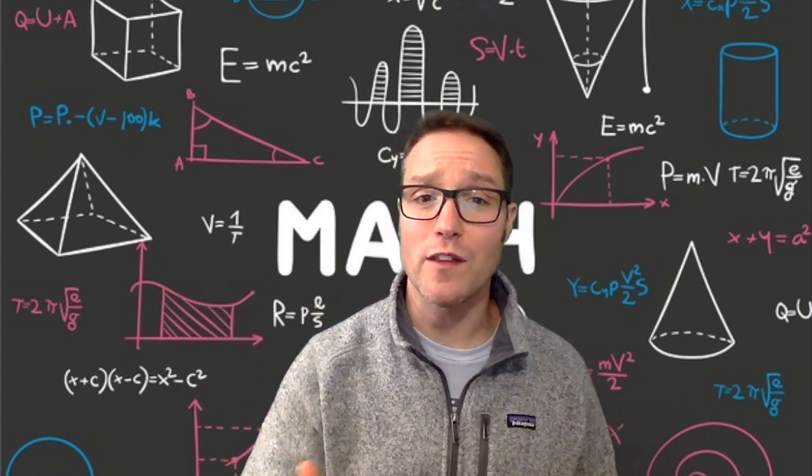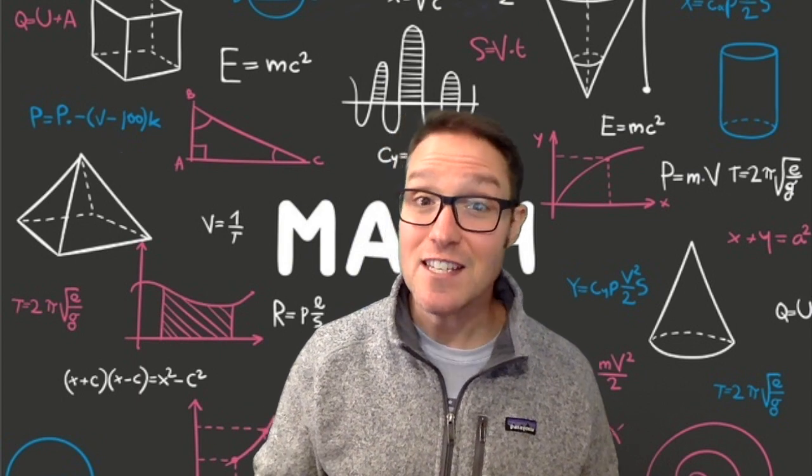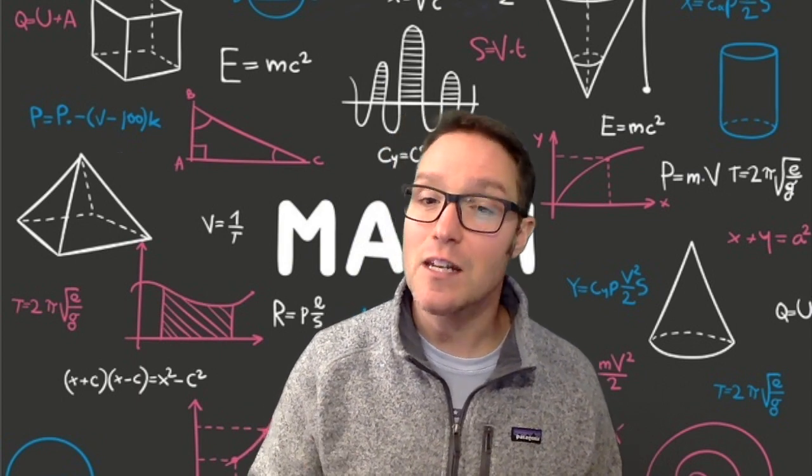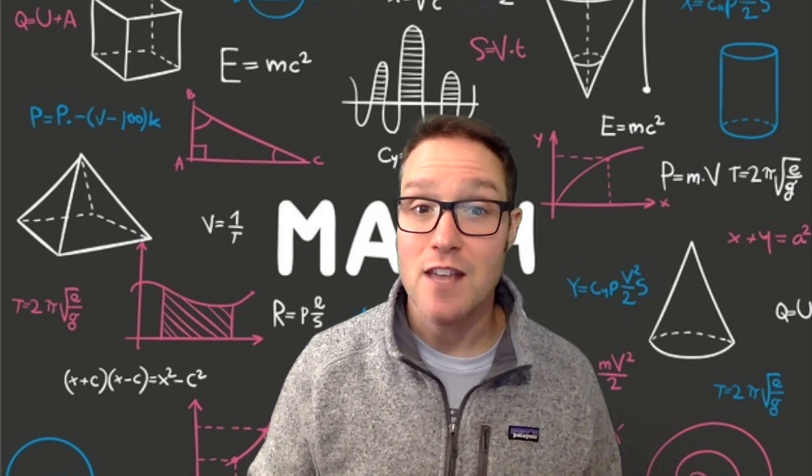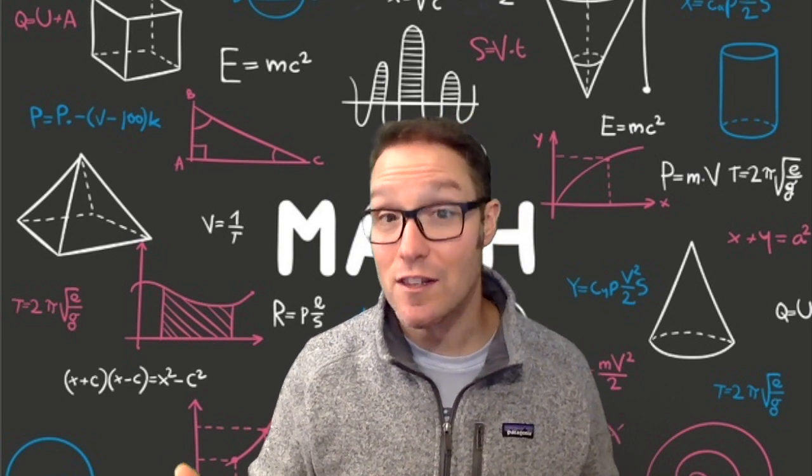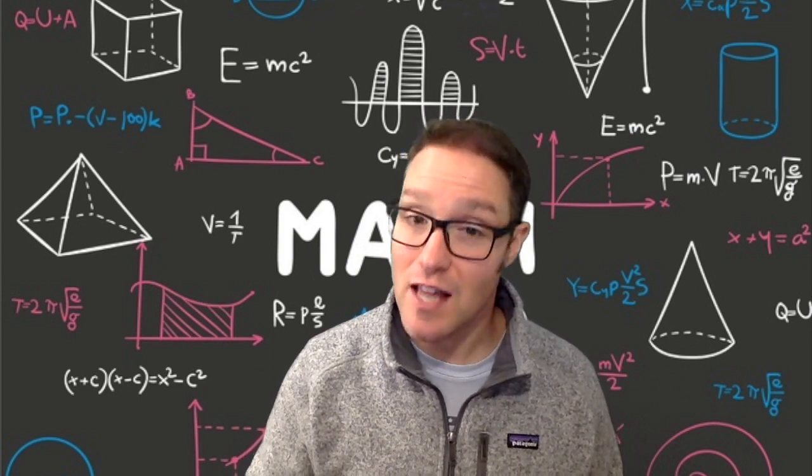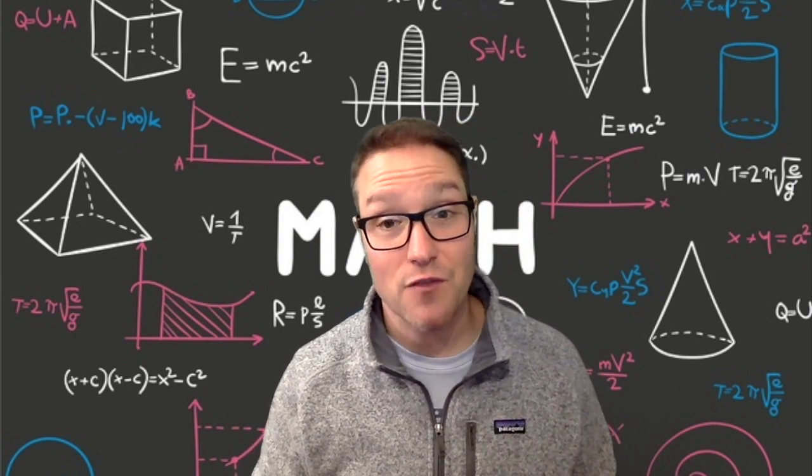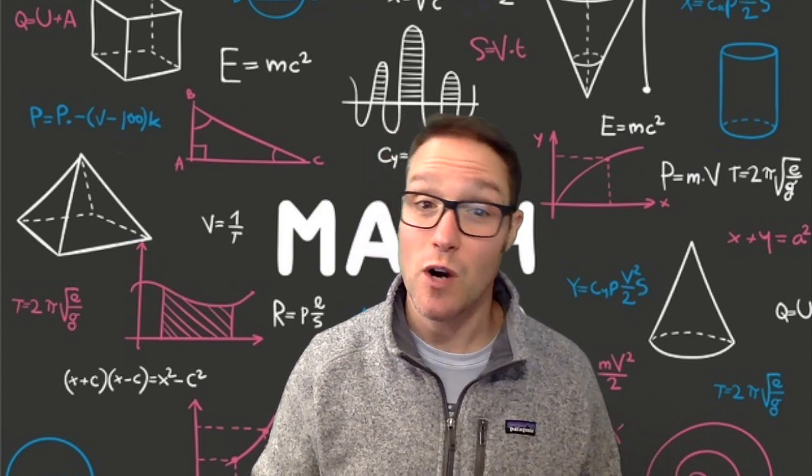If I flip a coin once, the outcome cannot be predicted with much accuracy. If I flip a coin six times, the number of heads is likely to be close to three, 50%, but it would not be a surprise if five or all six were heads. If I flip a coin 10,000 times, the number of heads is likely to be close to 5,000, 50%.